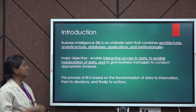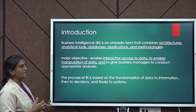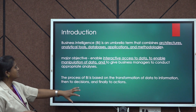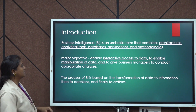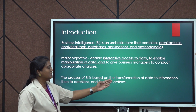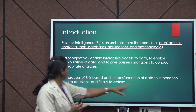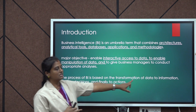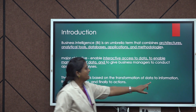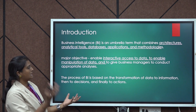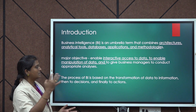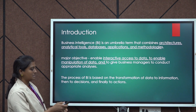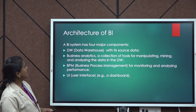The major objective of business intelligence is to easily access data, manipulate it, and enable business managers to conduct appropriate analysis to make informed decisions. The process of BI is based on transformation: data — which is raw and has no meaning on its own — is transformed into information, which is meaningful. Decisions are then taken from that information, and finally actions are performed.